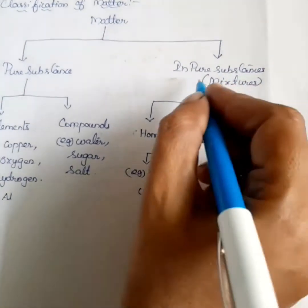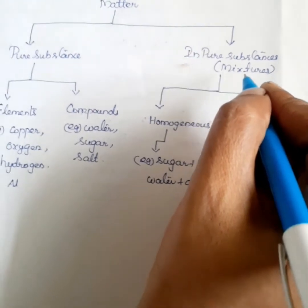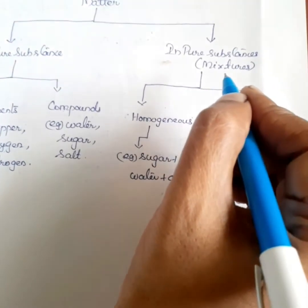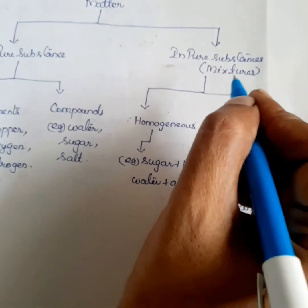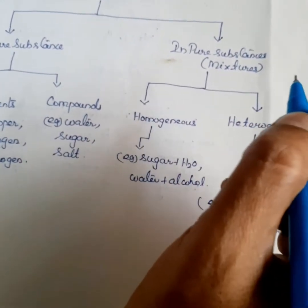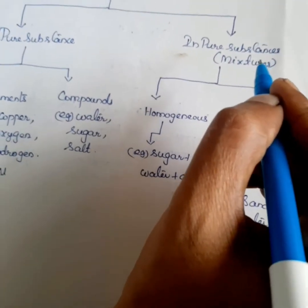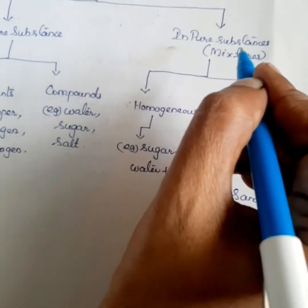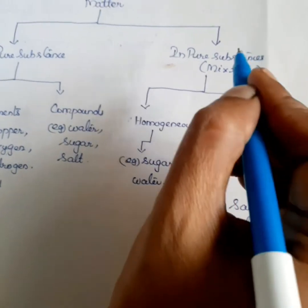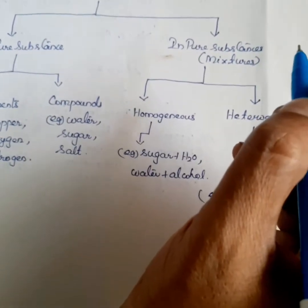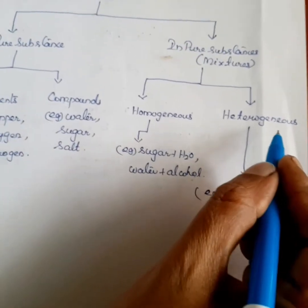Now we discuss about impure substance, otherwise called a mixture. A mixture is an impure substance. It contains two or more kinds of elements or compounds, or both, physically mixed together in any ratio. Examples are salt solution and air. Mixtures are classified into two types: homogeneous mixture and heterogeneous mixture.